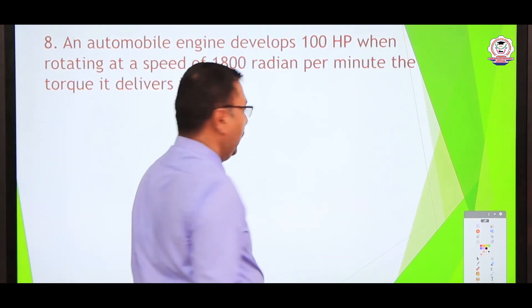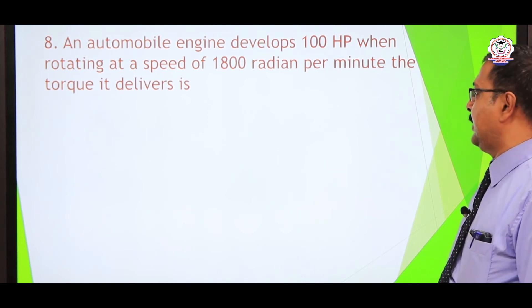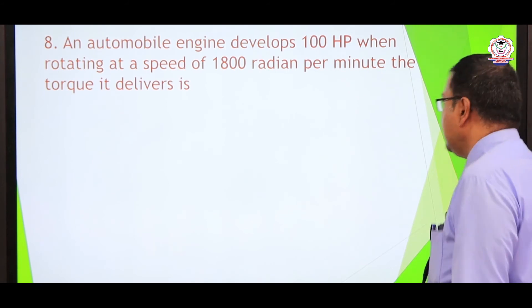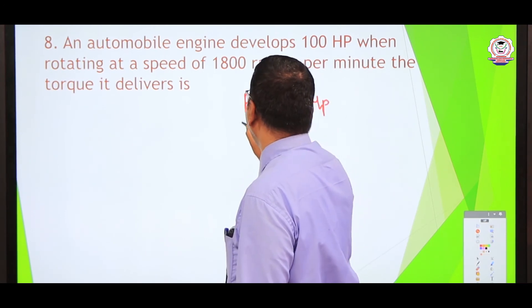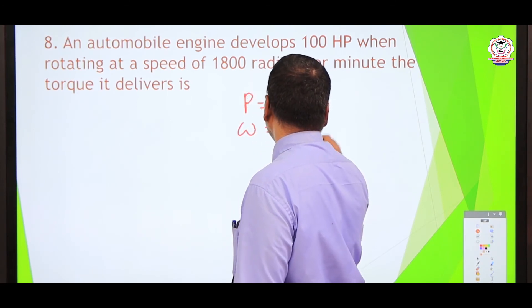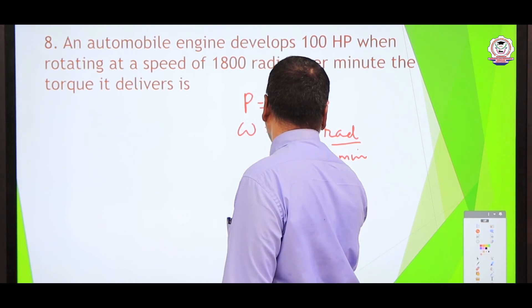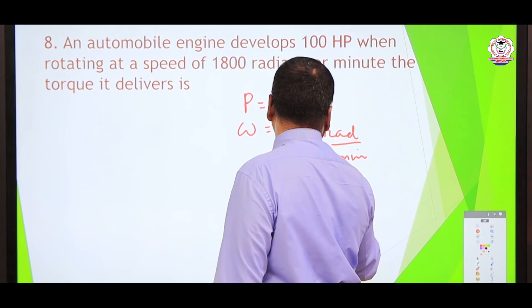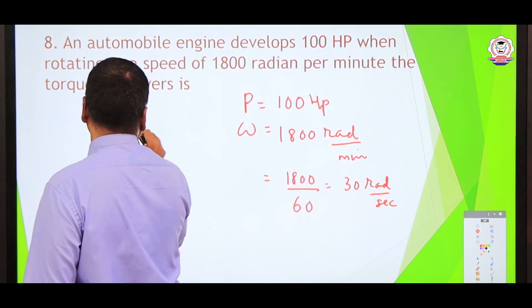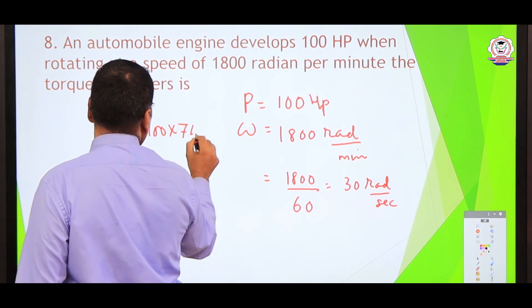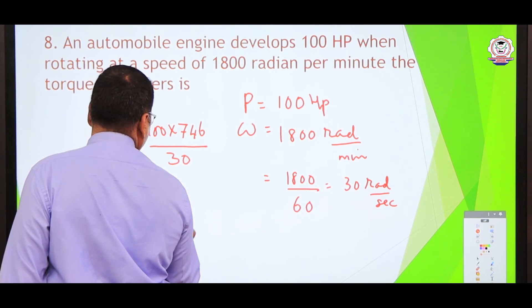An automobile engine develops 100 hp when rotating at 1800 radians per minute. Find the torque it delivers. First, convert omega: 1800 divided by 60 equals 30 radians per second. Then convert power: 100 hp equals 100 times 746 watts. Dividing power by omega gives torque, which is approximately 2487 Newton meters.